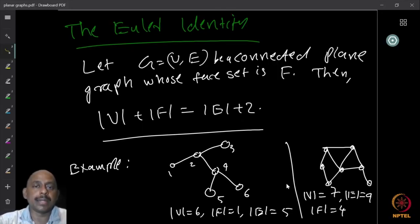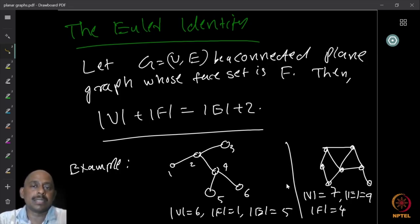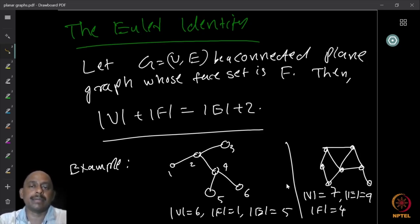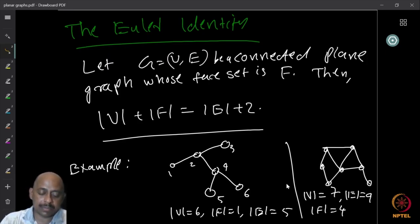This identity is called Euler's identity because Euler proved it for polyhedra — he observed it and showed it — and it has been generalized to graphs. Let G be a connected plane graph. A plane graph means it comes with an embedding, because without the embedding you cannot talk about the set of faces. So we talk about a plane graph when you have a planar graph with a fixed embedding. The identity states that the number of vertices plus number of faces equals the number of edges plus two.